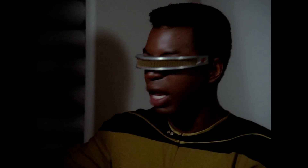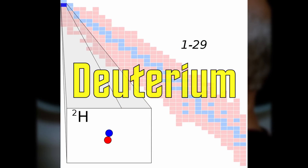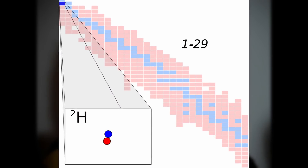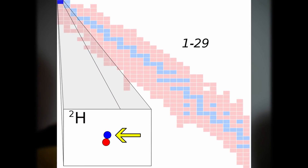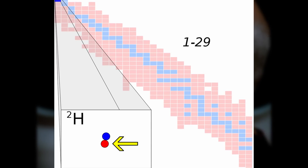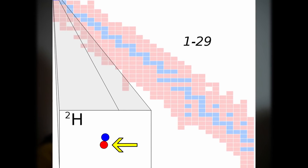Starfleet warp engines, at least, are fueled by a matter-antimatter reaction. The matter in this reaction is deuterium, a stable isotope of hydrogen that, in addition to the single proton that characterizes normal hydrogen, contains a single neutron as well. Thus, deuterium is sometimes called heavy hydrogen.